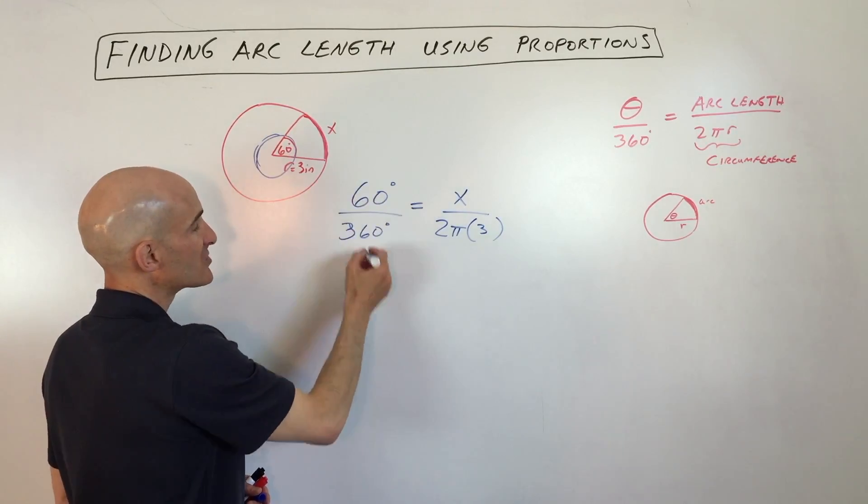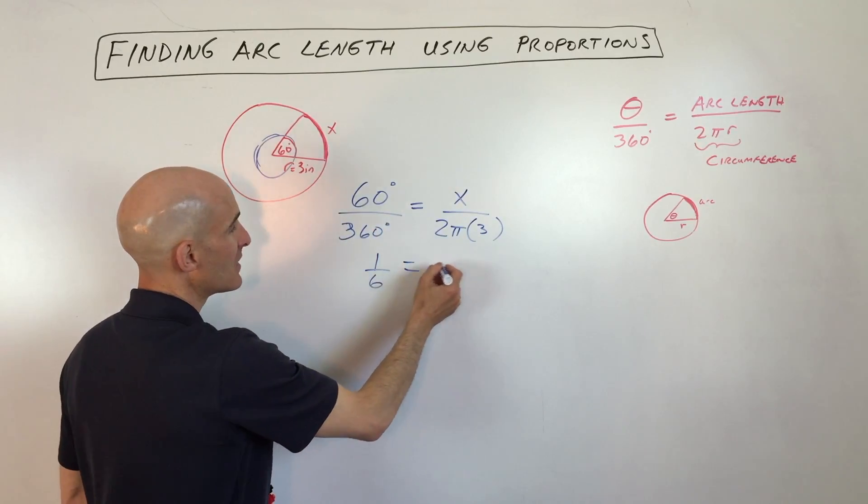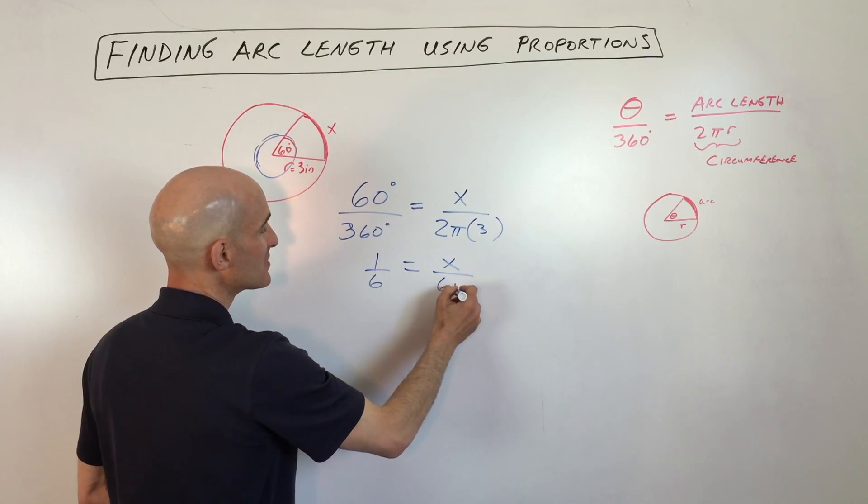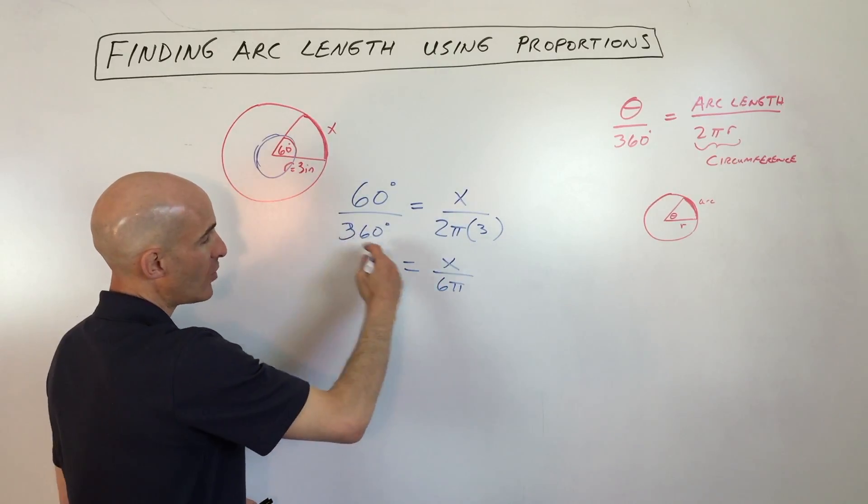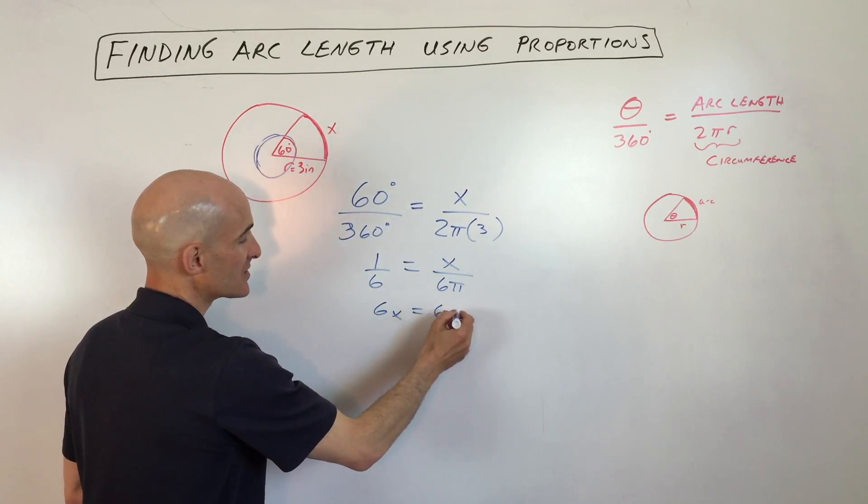So this can reduce down to 1/6, because 60 goes into 360 six times, and this is going to simplify to 6π. Now, you can cross multiply across the equal signs, so we get 6x equals 6π.